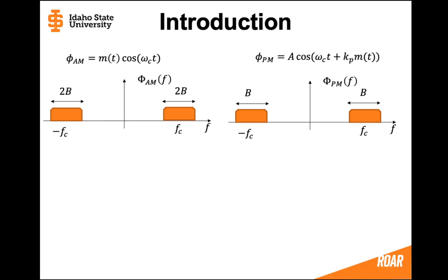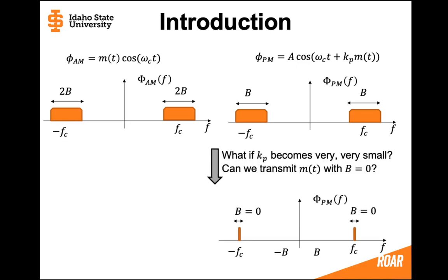Now if we look at this we could see, what if we made kp very small? What might happen? Would we be able to make kp so small that the phase modulated message essentially has a bandwidth of zero? Is that really possible? Could we transmit a message with a kp that's so small that we aren't actually using any bandwidth and thus we're saving money?